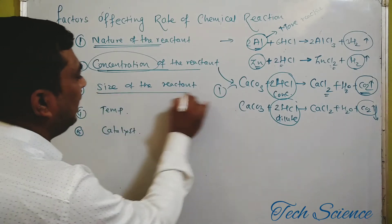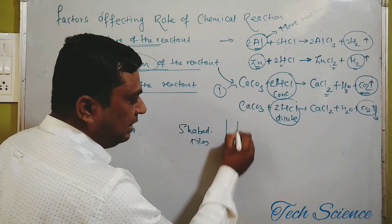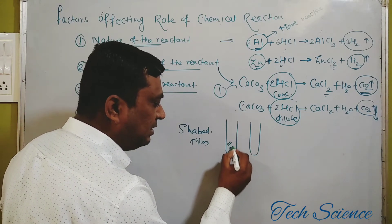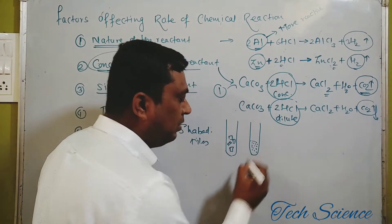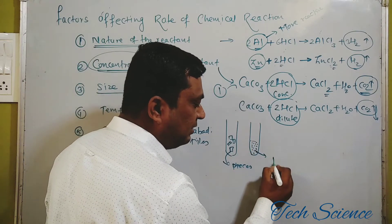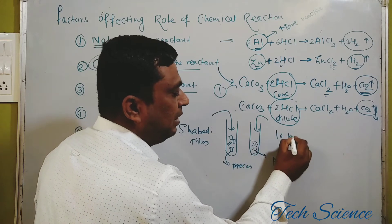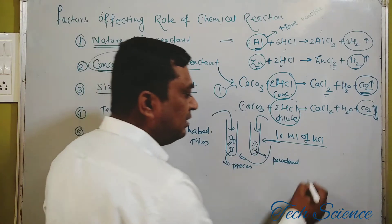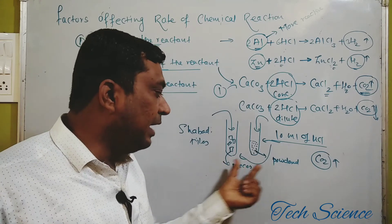For the third factor, size of the reactant, we do a small activity using Shahabad tiles. In both test tubes, we add Shahabad tiles — but in the first test tube, the tiles are in pieces format, and in the second test tube, they are in powdered format, with the same weight. When you pour the same amount of HCl — for example, 10 ml — into both test tubes, there is liberation of carbon dioxide gas in both cases.